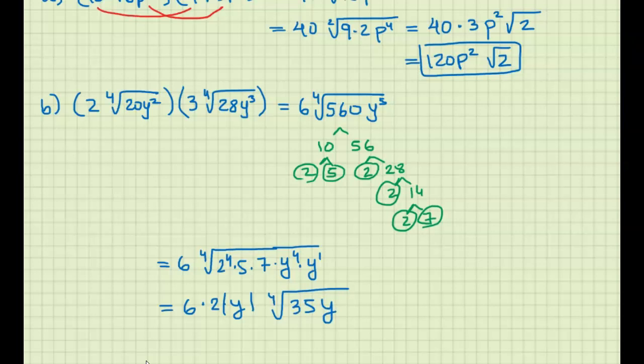So we have 12|y|∜35y. That's it for these problems.